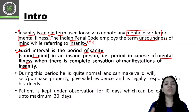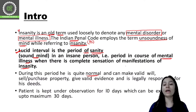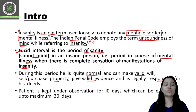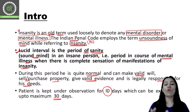If any person is mentally ill, in between intervals they become a little better — that is called a lucid interval, and that is the period of sanity. During this period, that person is quite normal. They can make a valid will and sell or purchase property, and can give valid evidence. The patient is kept under observation for 10 days, which can be extended up to a minimum of 30 days, to check whether that person is becoming sane between episodes.